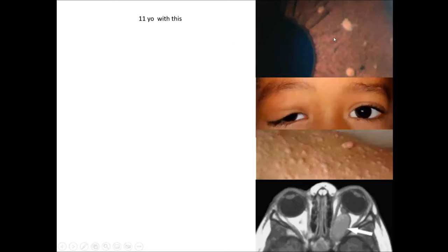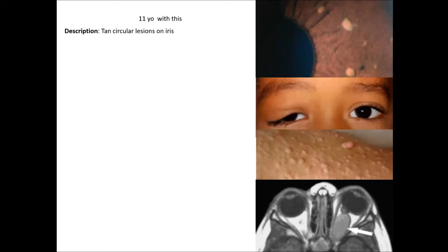The top picture shows Lisch nodules — small, tan, pedunculated lesions on the anterior iris. When you see this kind of patient, we'll go through history, exam, testing, diagnosis, imaging or labs, patient education, and plan. For history, you'll ask about onset and duration of symptoms, any visual changes, double vision, and for all these phacomatoses, any systemic or neurological issues.